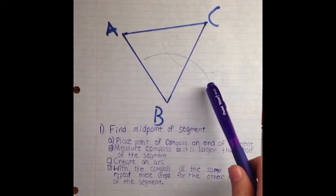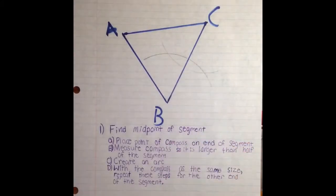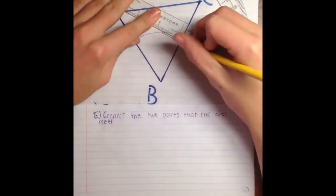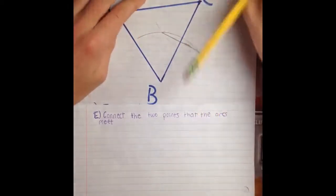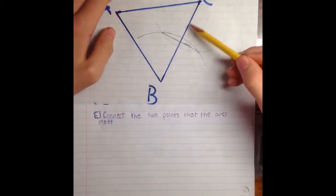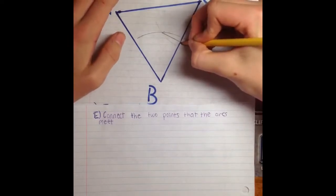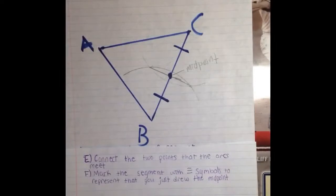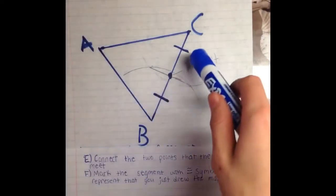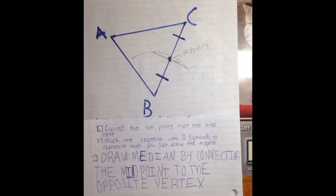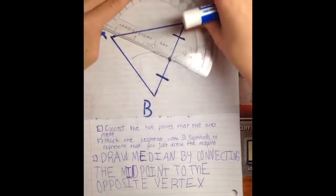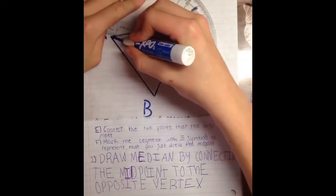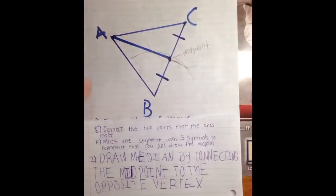You will see that these two arcs connect at two different points. After you draw this segment, you will notice that it intersects with the segment you are trying to find the midpoint of. The point of intersection is known as the midpoint of that segment. Next, mark the segment with congruent symbols to show that you just drew the midpoint. Your last step is to draw the median by connecting the midpoint to the opposite vertex. And there you go — you have now constructed a median using only a compass and a straight edge.